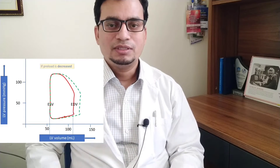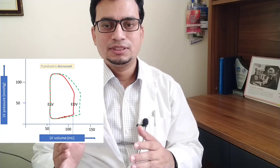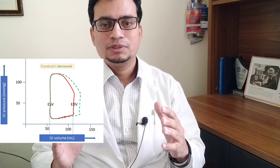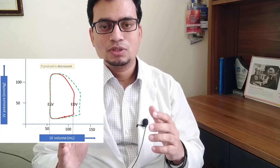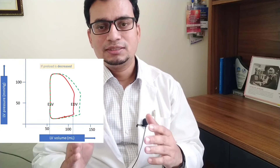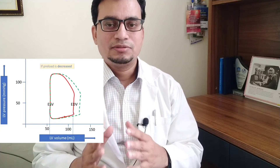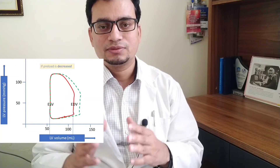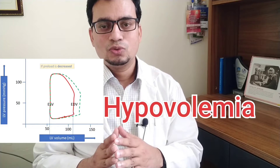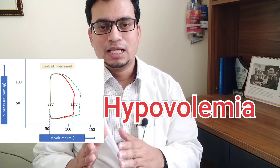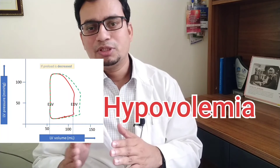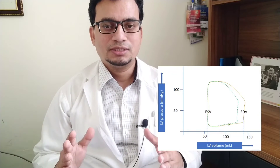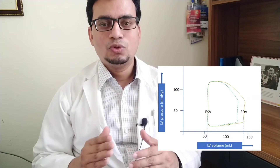When there is a deficiency in preload, less tension is built up in the ventricle at the end of diastole, resulting in less stroke volume. This situation is commonly seen in hypovolemic conditions. Another scenario is where you can increase the preload and get more stroke volume.